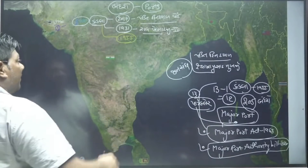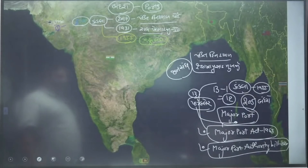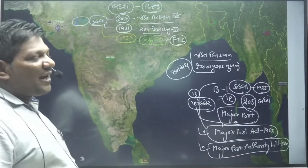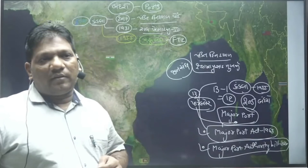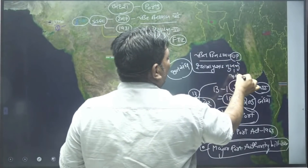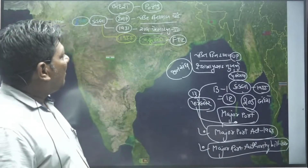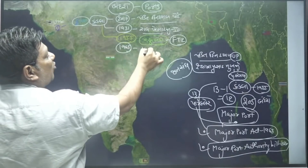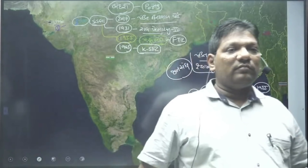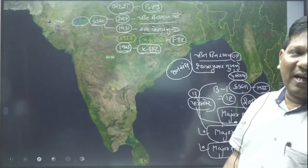Syama Prasad Mukherjee declared this in 1955. This free trade zone is made as a free trade zone. If Pandit Deen Dayal is not up, then it is not up. In 1965, we made the first stage - Kandla stage - which is called the Special Economic Zone. Kandla Special Economic Zone.